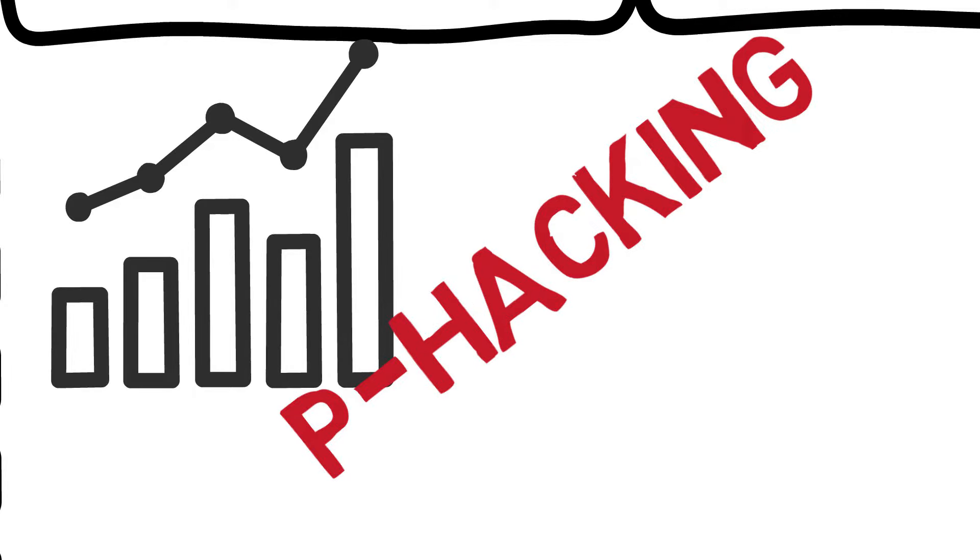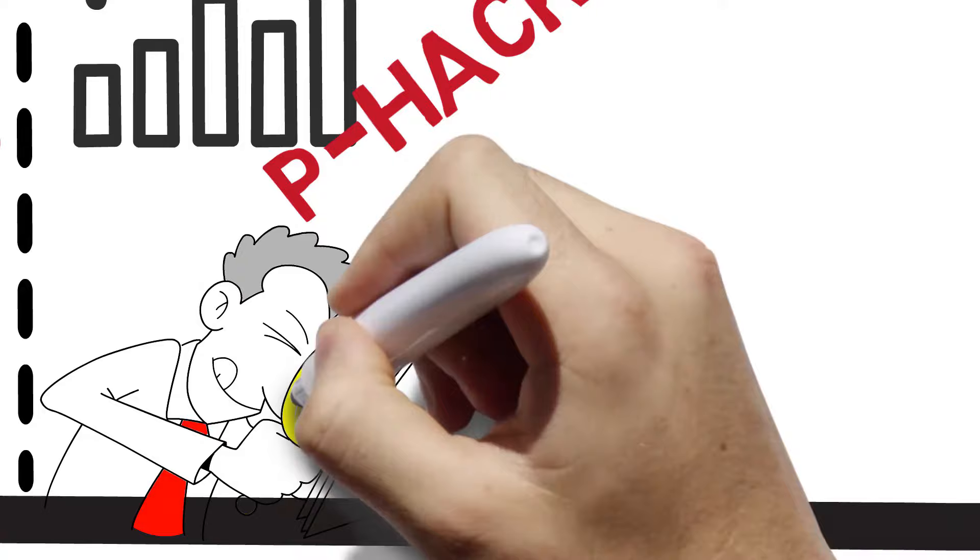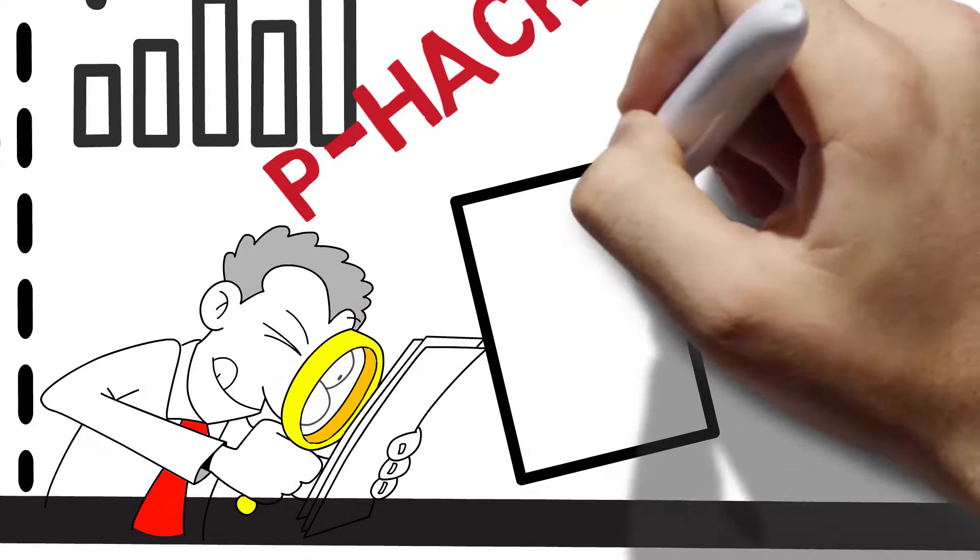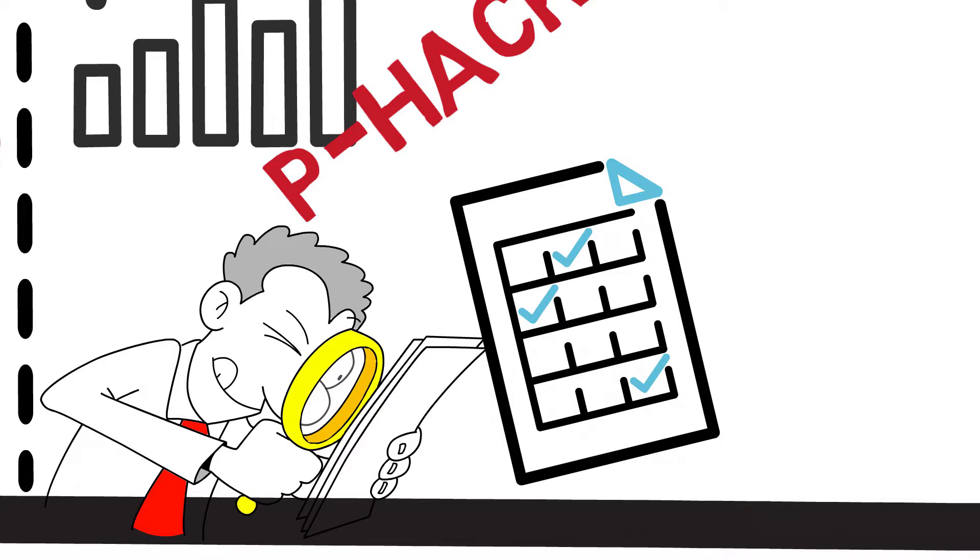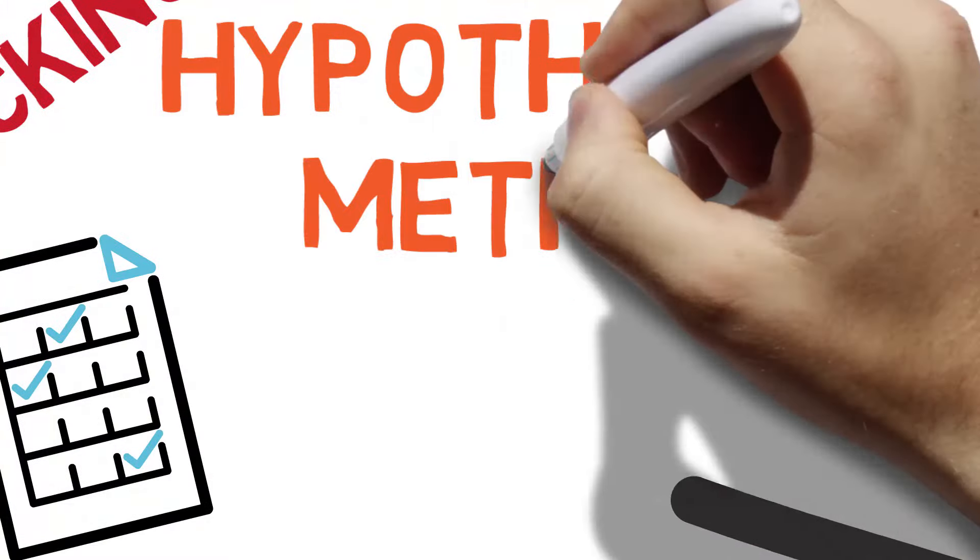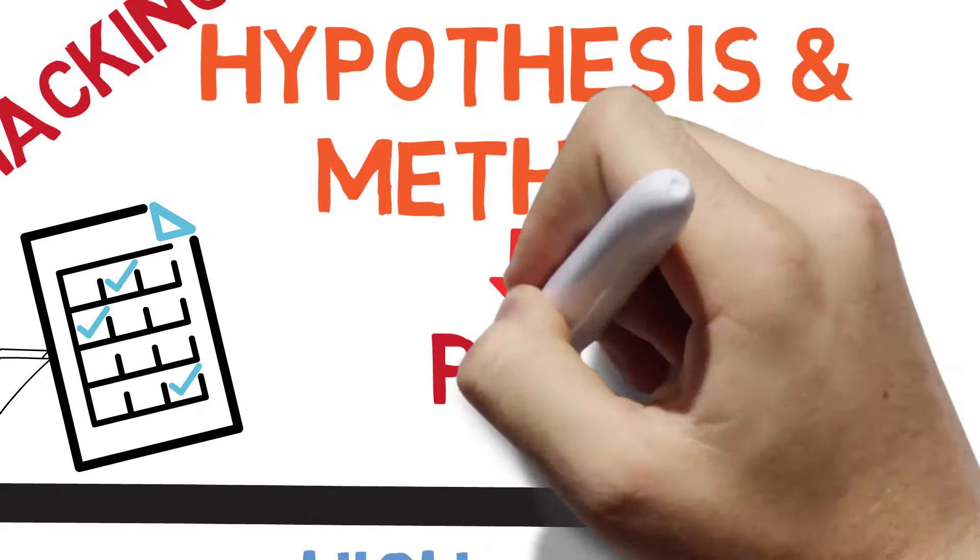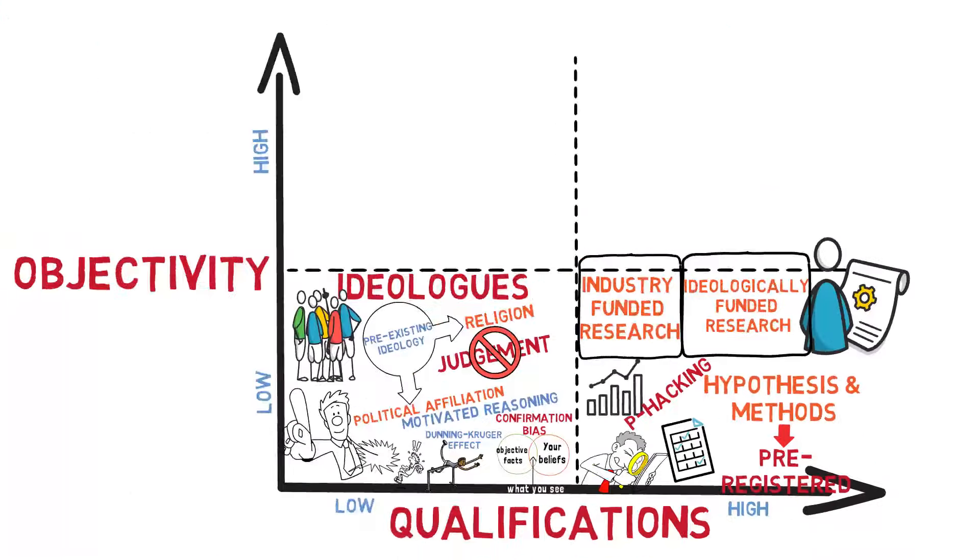Now p-hacking is a process whereby researchers, deliberately or sometimes even unconsciously, make a small number of decisions but in sequence along the research process path that biases the results in a particular direction. Now research coming from industry, for example, can be considered more reliable if the study hypothesis and the methods are pre-registered publicly ahead of time and the company is committed to publishing the results no matter what the outcome.